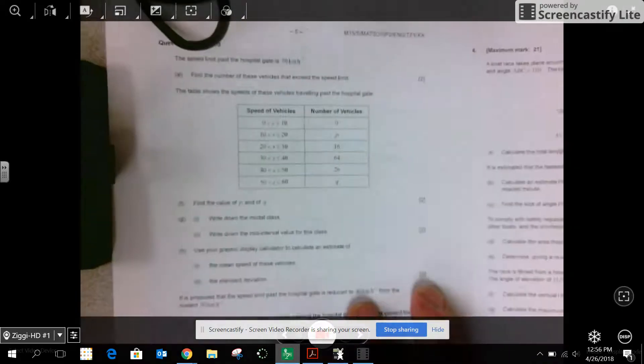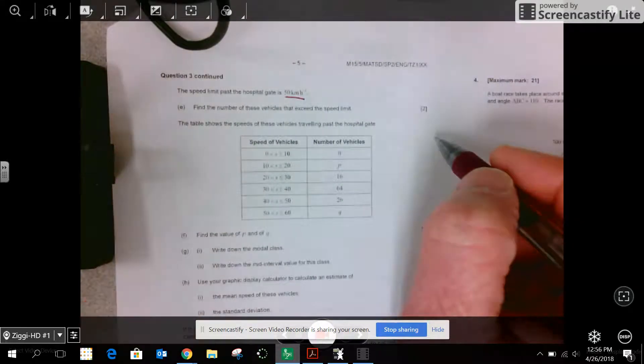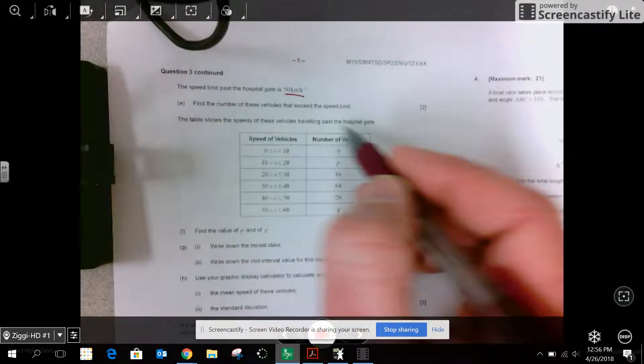This problem continues. And we have a table of values. The speed limit past the hospital is 50. Find the number of vehicles that exceed the speed limit.